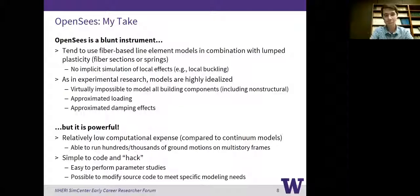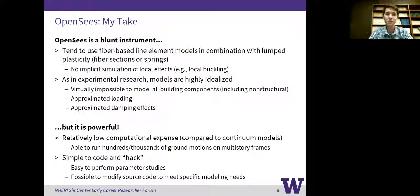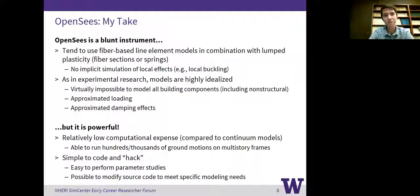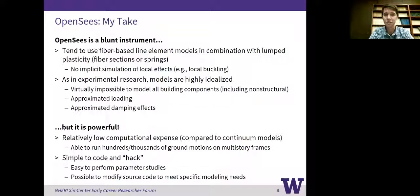My take on OpenSees is that it's really a blunt instrument. We tend to use fiber-based line element models, sometimes in combination with lumped plasticity, whether they're zero-length fiber sections or springs. I say it's a blunt instrument because it's kind of imprecise — there's no implicit simulation of local effects. In steel, for instance, we're not able to simulate local buckling behavior implicitly; maybe we can approximate it with the material model, but there's no implicit formulation handling local buckling of those line elements.